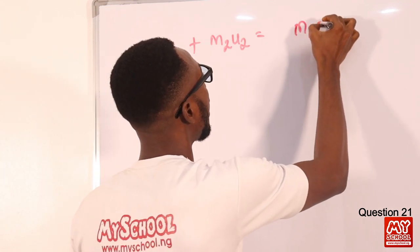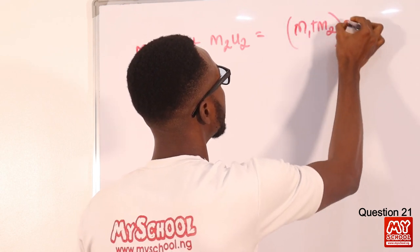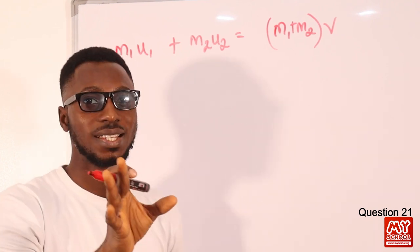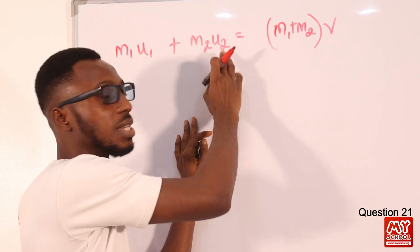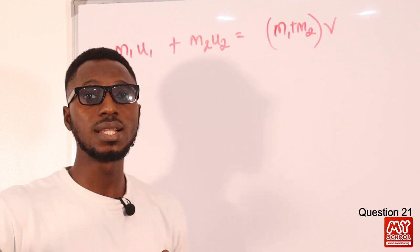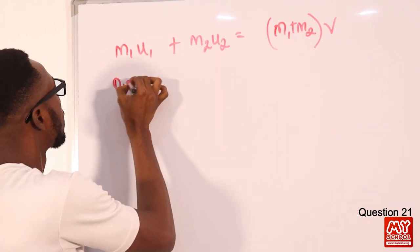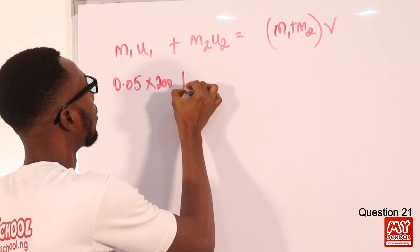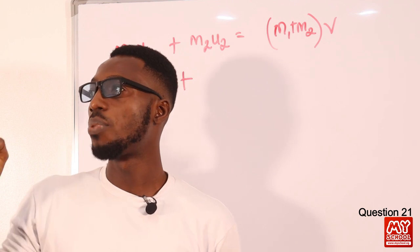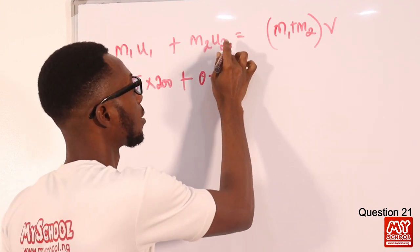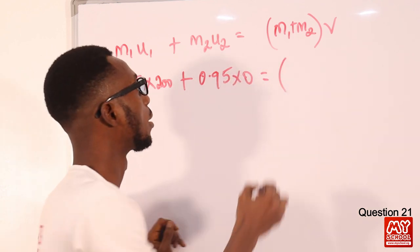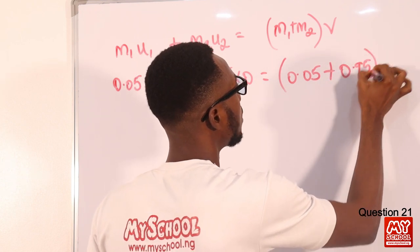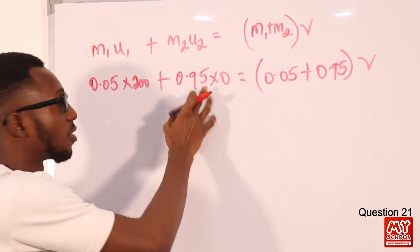Since it's inelastic, they stick together after collision and have a common velocity, so that'll be (m1 + m2) times the common velocity. The lead block is at rest, so its velocity is zero and that term vanishes. We have 0.05 kg times 200 m/s plus 0.95 kg times 0, equals (0.05 + 0.95) times common velocity v.